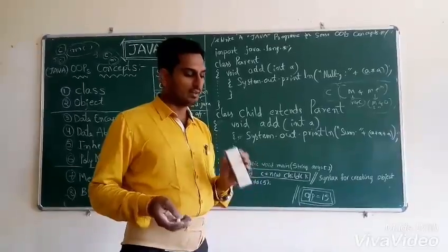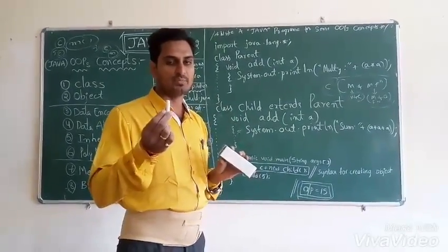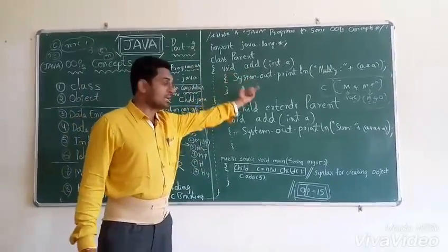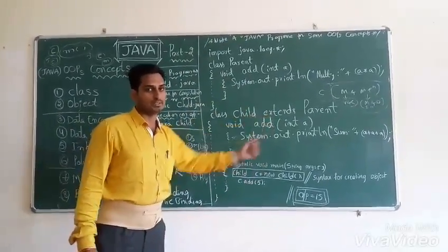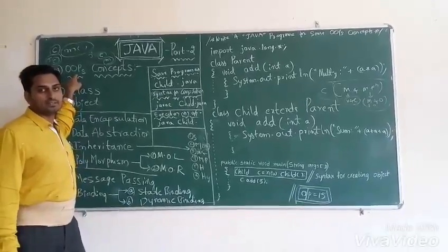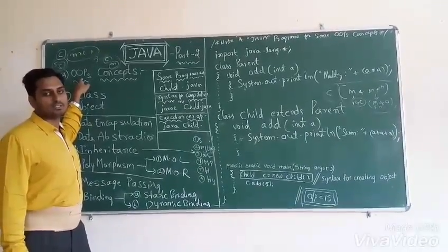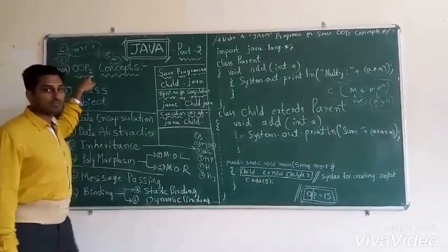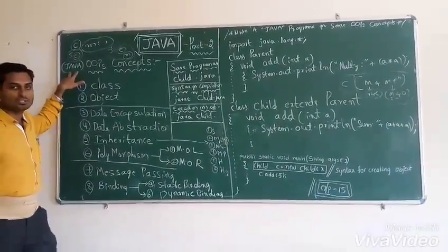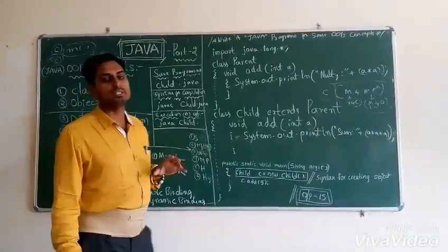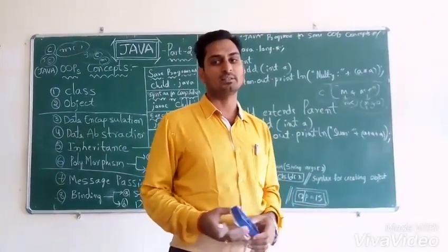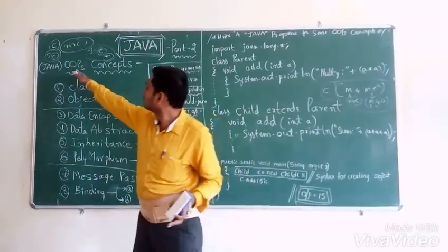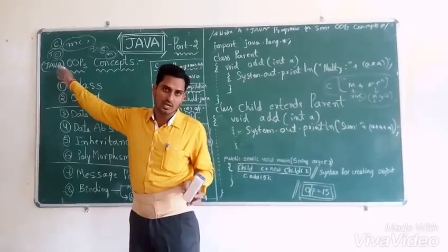Object means any real-world entity is an object. This duster is an object, this chalk is an object, even I myself am an object. Oriented means dependent — with objects we write programs. Programming means system or software, using Java programming. OOPS is the theory and Java programming is the practical part. OOPS is the core of Java.